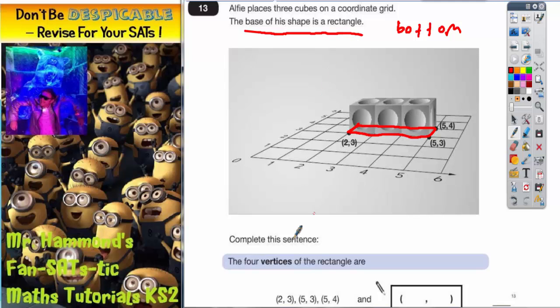Now it says the four vertices of the rectangle are—remember, vertices is a posh word for corners—and we've been given three of them: (2, 3) this one, (5, 3) this one, (5, 4) this one. The only one we haven't been given, I'll try a different color, is that one at the back.